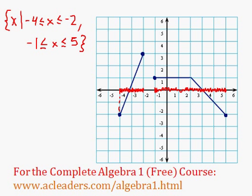What about the range? The range will be a little bit simpler. Let me pick a different color here. It looks like the smallest value for y is negative 2.